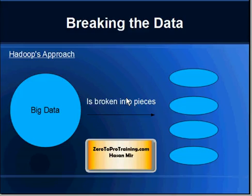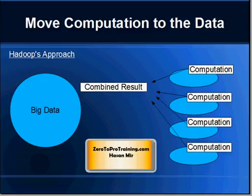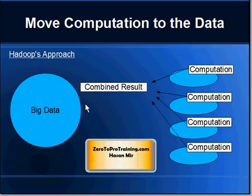Hadoop takes a very different approach. It breaks the data into smaller pieces, which is how it is able to deal with big data. It also breaks the computation down into smaller pieces and sends each piece of computation to each piece of data. The data is broken into equal pieces so that child computations can finish in equal amounts of time. Once all computations are finished, their results are combined together and sent back to the application as a combined overall result.